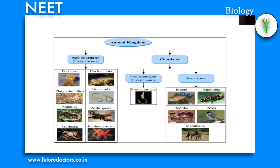The animal kingdom is divided into two: non-chordates and chordates. Non-chordata includes about 35 phyla out of which 11 are considered major phyla. Animals can be classified into two major groups on the basis of the presence or absence of notochord: non-chordata means absence of notochord, and chordata means presence of notochord. They can also be classified on the basis of the presence or absence of a vertebral column into invertebrates (without backbone) and vertebrates (with backbone).